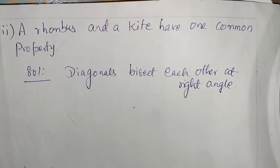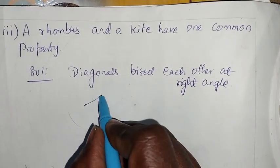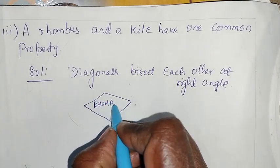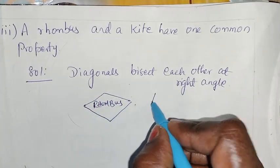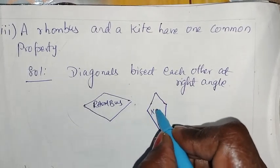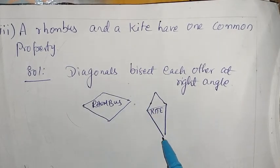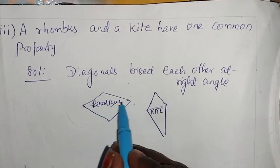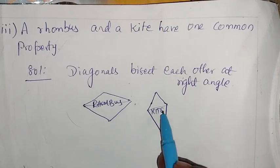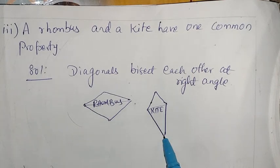Third subdivision: Rhombus and Kite have one common property. The diagonals bisect each other at right angles. So rhombus and kite have one common property — diagonals bisect each other at right angle.